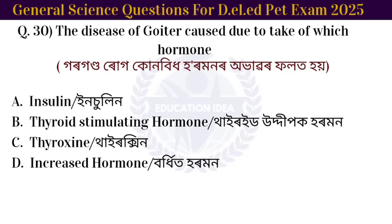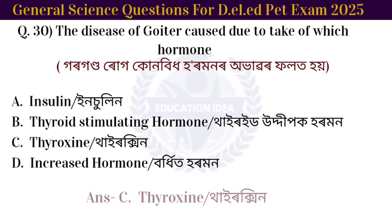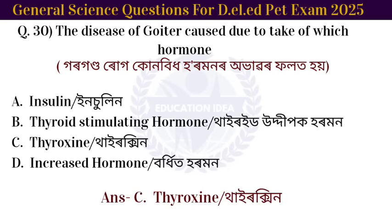Next question: the disease of goiter is caused due to deficiency of which hormone? The answer is thyroxine.